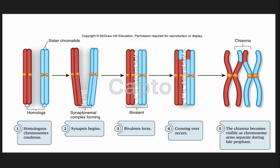Of all the stages that occur in meiosis, prophase I holds particular importance, as homologous chromosomes — meaning one maternal and one paternal — are paired and exchange genetic material. This is known as chromosomal crossover, and results in recombinant chromosomes during sexual reproduction.